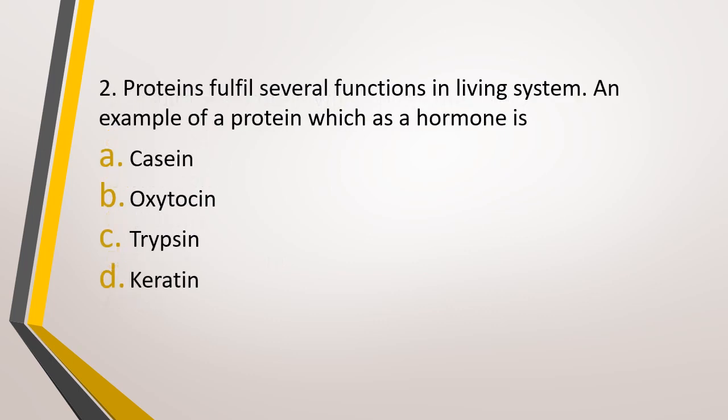Question number 2. Proteins fulfill several functions in living systems. An example of a protein which acts as a hormone is: option A, casein; option B, oxytocin; option C, trypsin; option D, keratin. The correct answer is option B, that is oxytocin.